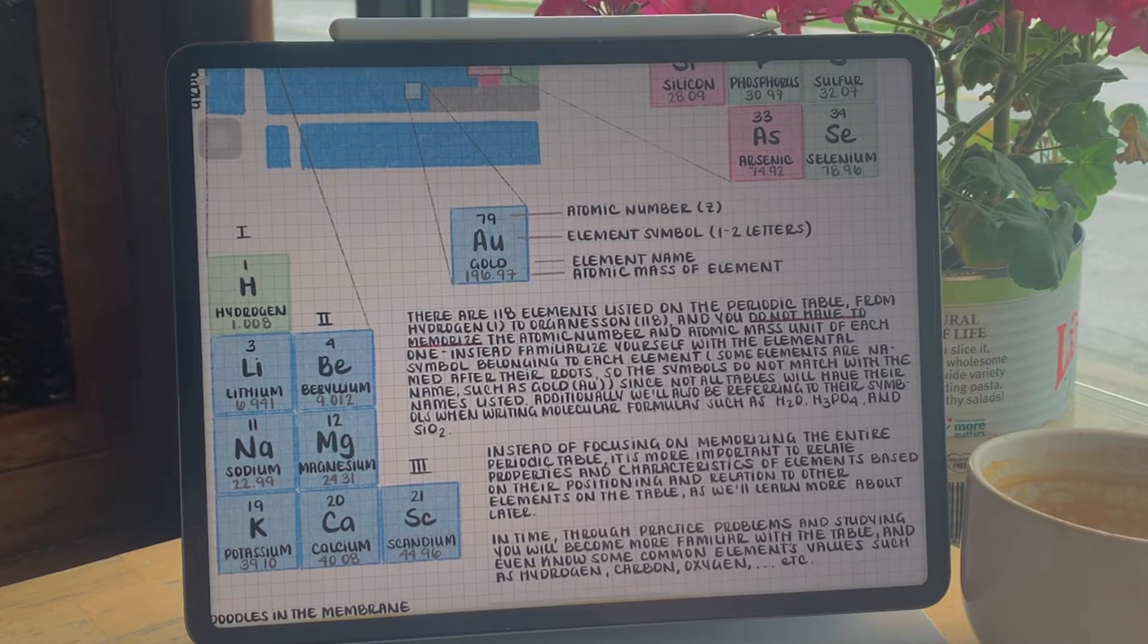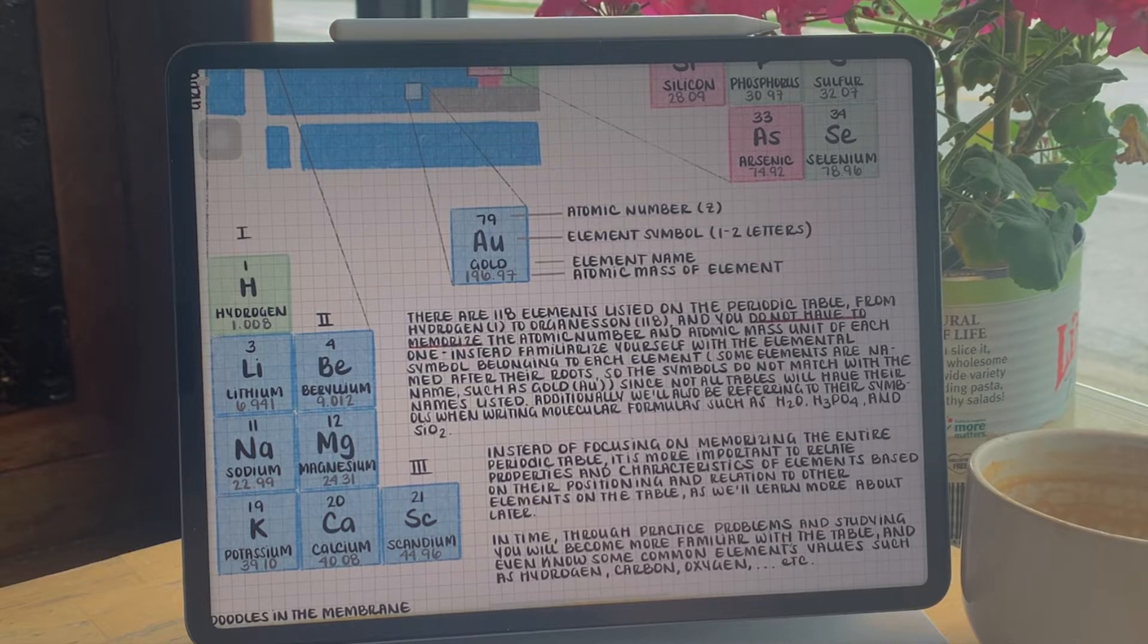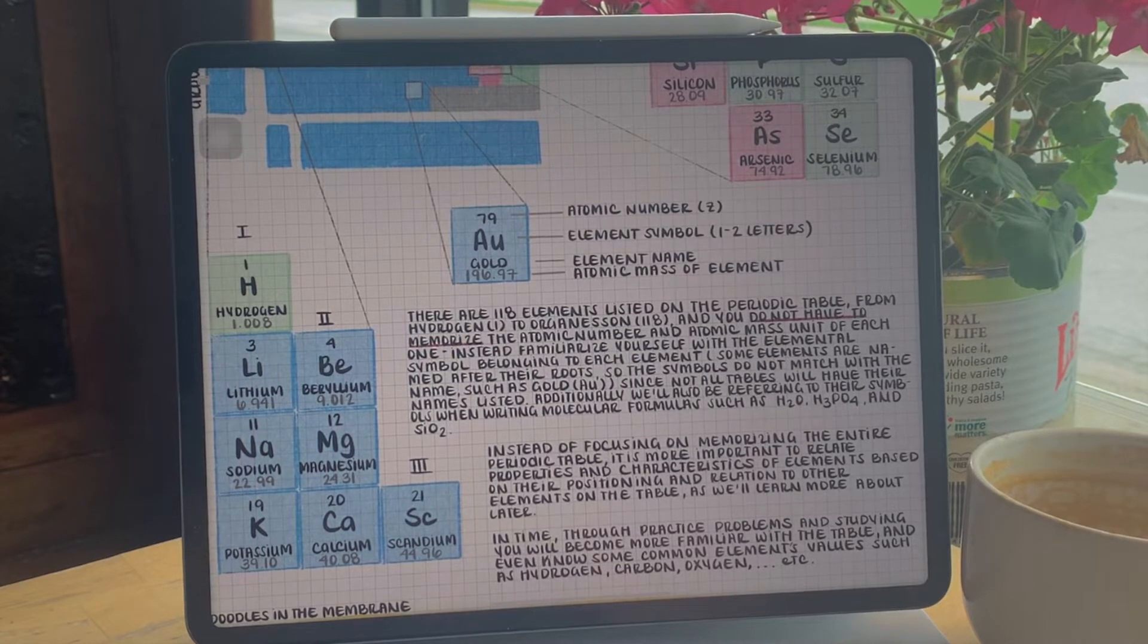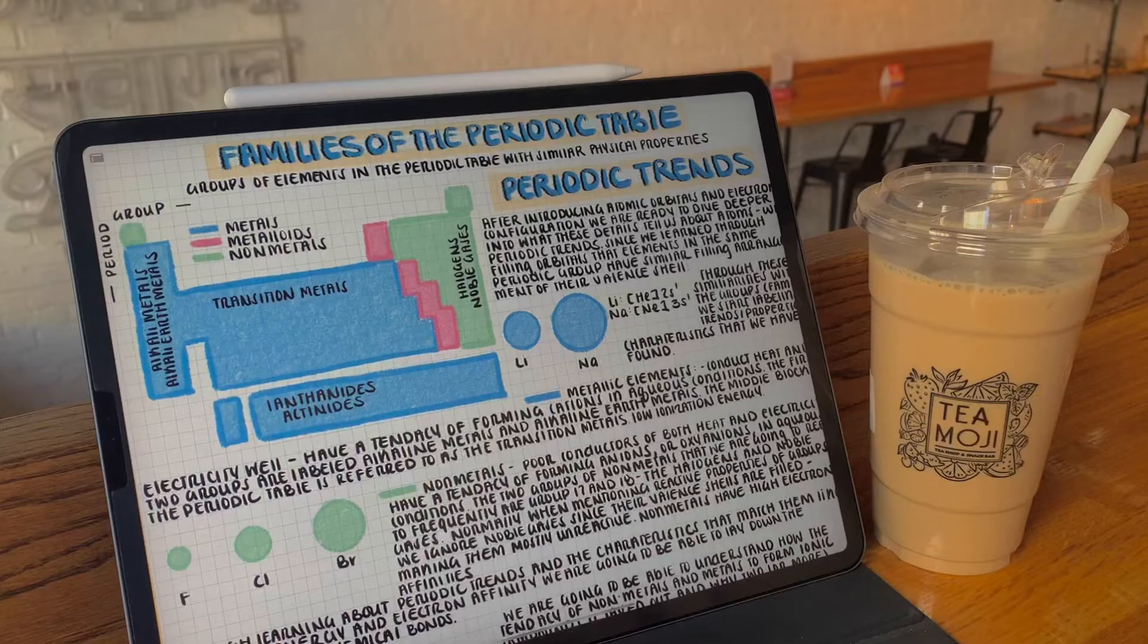Additionally, we'll be referring to their symbols when writing out molecular formulas, such as H2O, two hydrogens and one oxygen, H3PO4, and SiO2, for example.